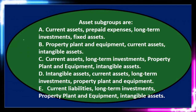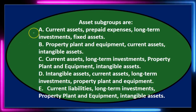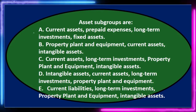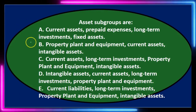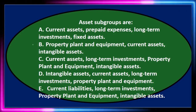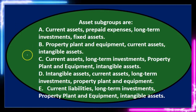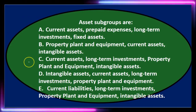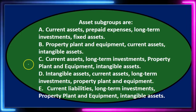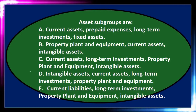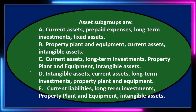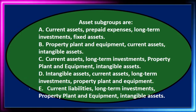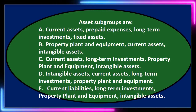Next question: asset subgroups are — A: current assets, prepaid expenses, long-term investments, fixed assets. B: property, plant, and equipment, intangible assets. D: intangible assets, current assets, long-term investment, property, plant, and equipment. E: current liabilities, long-term investments, property, plant, and equipment, intangible assets.